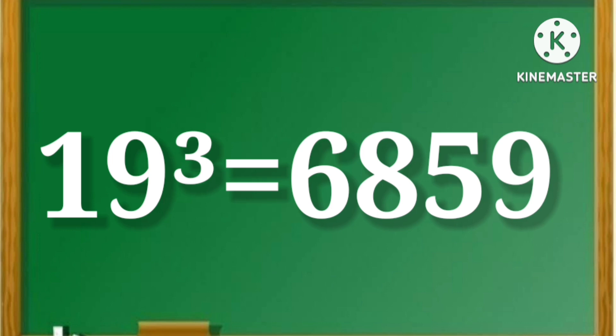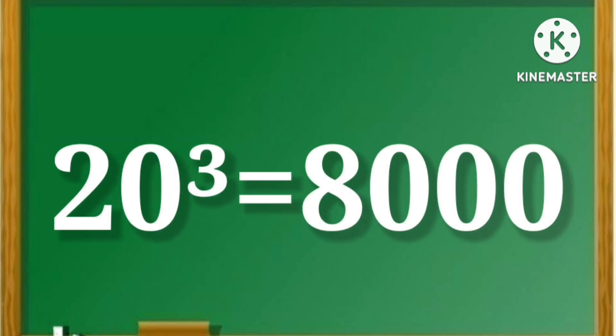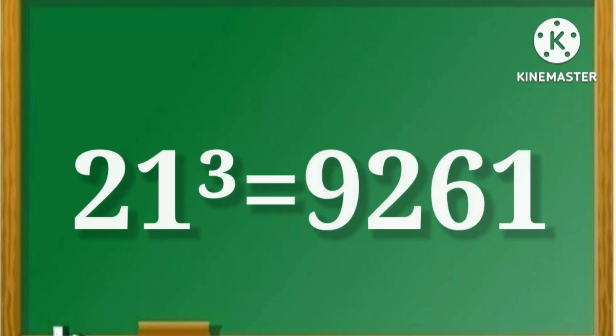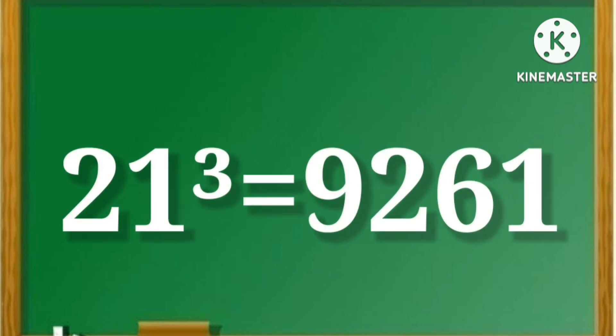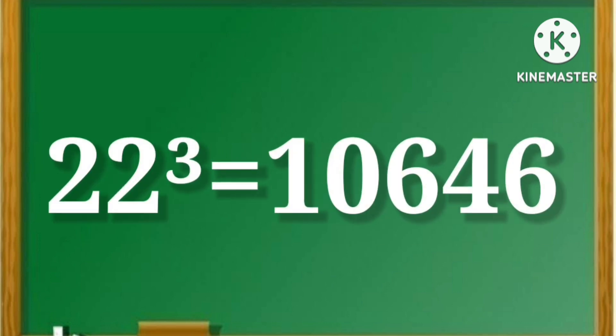20 cube is equal to 8000. 21 cube is equal to 9261. 22 cube is equal to 10646.